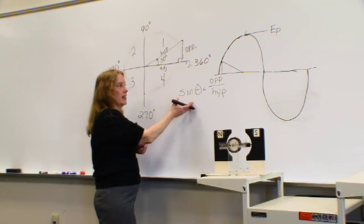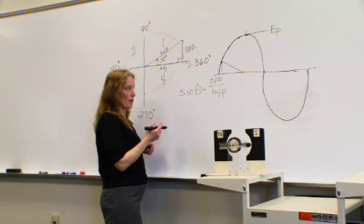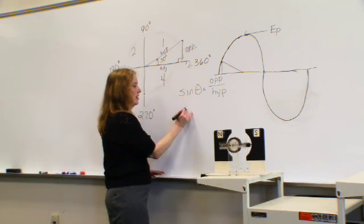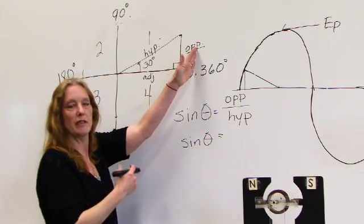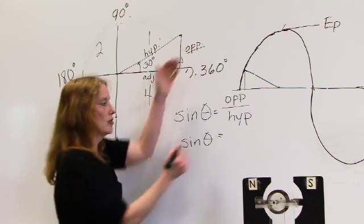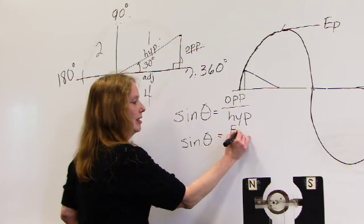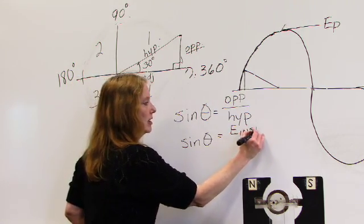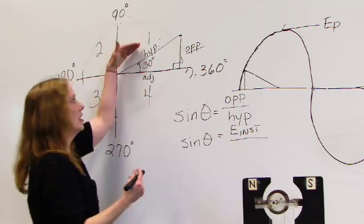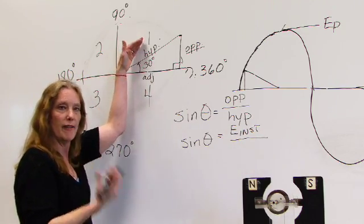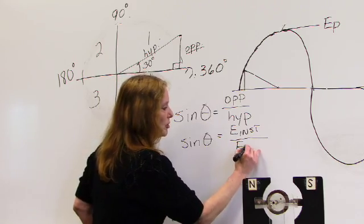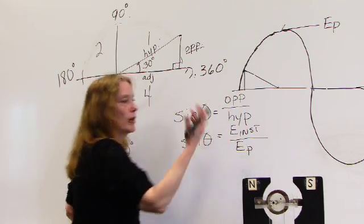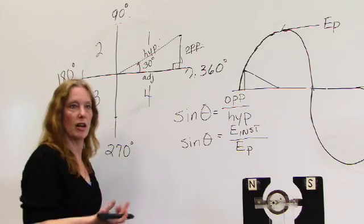Now instead of having sine theta is equal to opposite over hypotenuse, let's say sine theta. As we said, our side opposite is representative of our instantaneous voltage. So that would be E instantaneous. And our hypotenuse is representative of our E peak voltage or the max voltage that is produced or created by that rotation of the field.